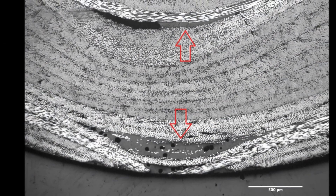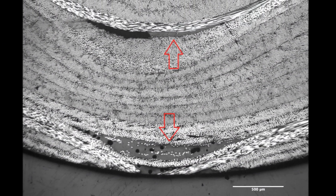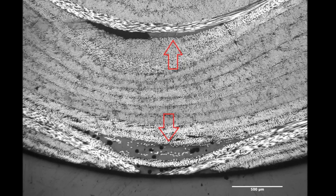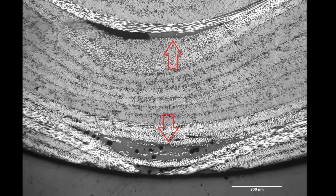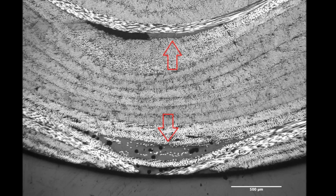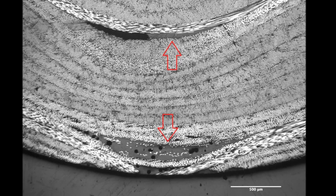Here we have a micrograph of a carbon rim. You can see the individual plies and layers stacked on top of each other in different directions. There are good examples of resin rich areas both at the top and the bottom, indicated by the red arrows. At the top, you can see the resin has pooled in a well, and right next to it is a black area — that's a void.